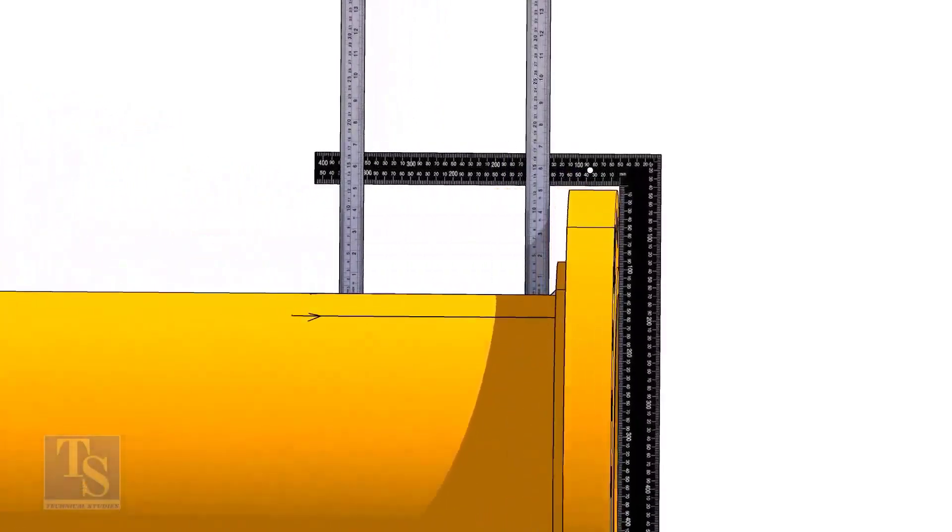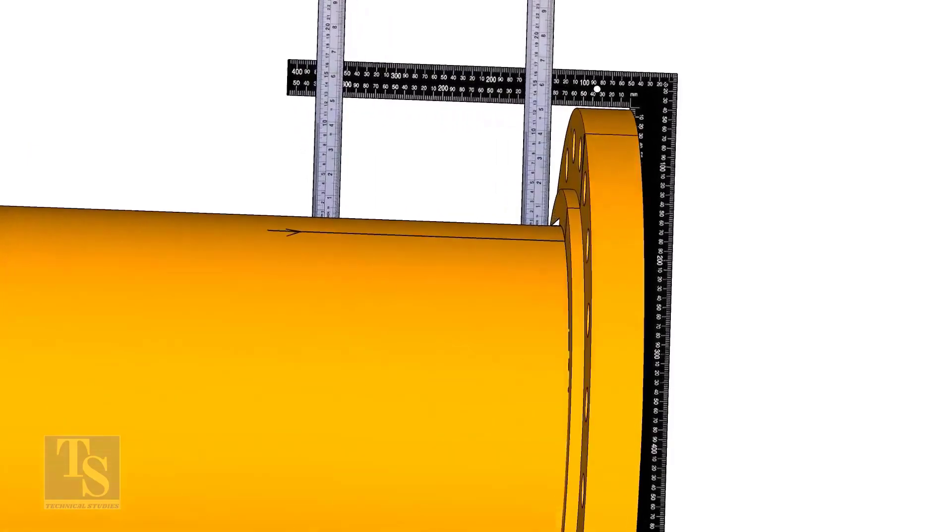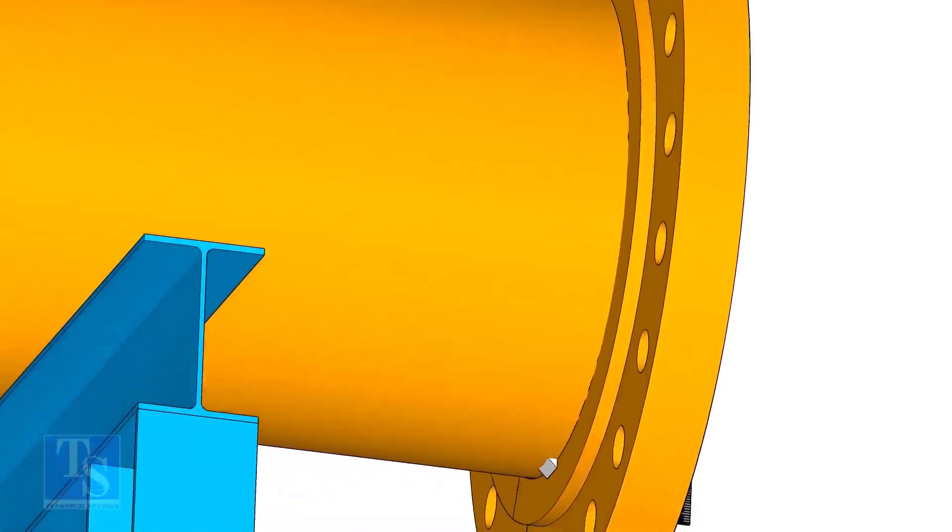Tack weld on the top of the pipe with the flange and check the squareness. If correct, tack weld at the bottom side also.